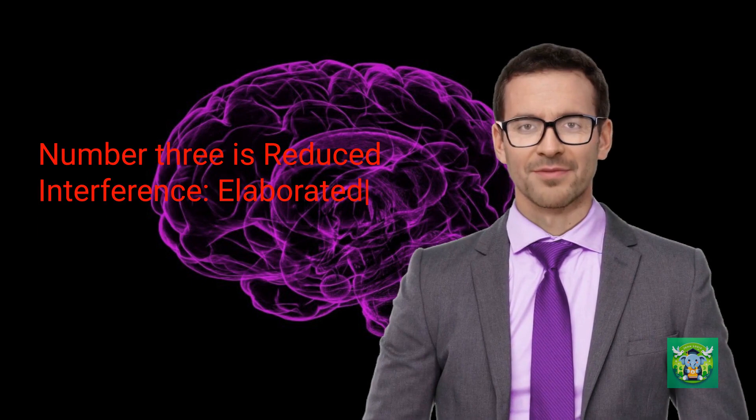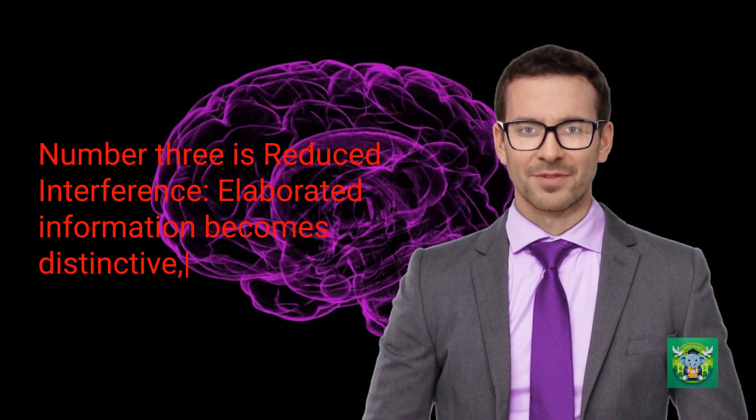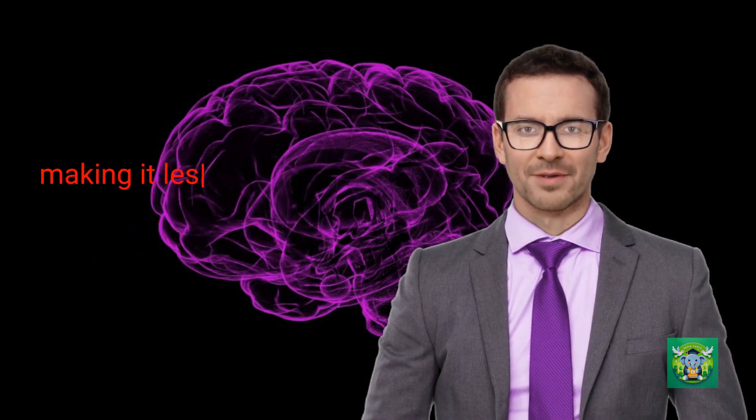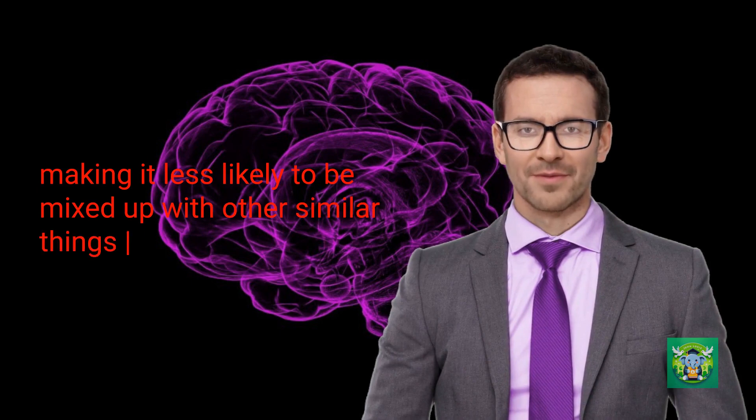Number three is reduced interference. Elaborated information becomes distinctive, making it less likely to be mixed up with other similar things you've learned.